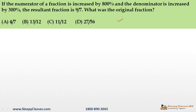Let the original fraction be A/B. The numerator A is increased by 800% and denominator B is increased by 300%. Now, what does 800% increase mean? If you have a quantity X and increase it by 100%, it becomes 2X. If you increase X by 200%, it becomes 3X. So the final quantity is the original plus the increase.